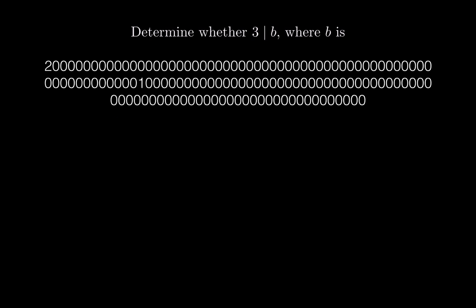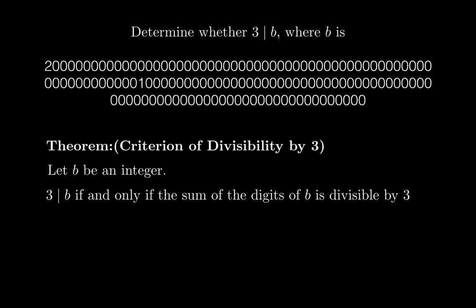Let's come back to the question: does 3 divide B where B is that large number? We already know the answer is yes, confirmed by Wolfram Alpha. But let's check this theoretically, and you'll see it's a lot easier and faster. The criterion for divisibility by 3 is: 3 divides an integer B if and only if the sum of the digits of B is divisible by 3. These two statements are equivalent.